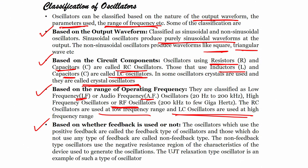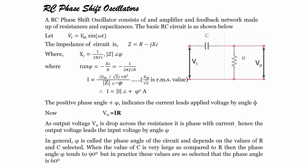Based on whether feedback is used or not: oscillators which use positive feedback are called feedback-type oscillators, and those which do not use any feedback are called non-feedback-type oscillators. Non-feedback-type oscillators use the negative resistance region to generate oscillations; the UJT relaxation oscillator is an example of such a non-feedback-type oscillator.